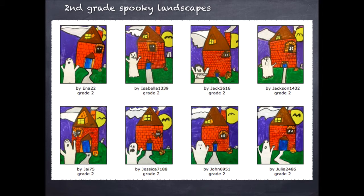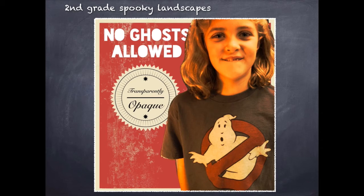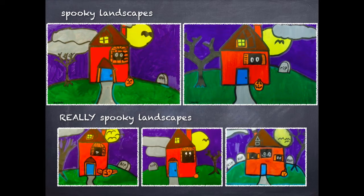I'm going to start by looking at a spooky landscape painting. This project I've done with second grade — the idea is that we tried to show foreground, middle ground, and background. Our ghost was in the foreground with overlapping, our spooky house was in the middle ground, and our sky, moon, bat, and clouds were all part of the background. Students were exploring concepts of landscape. But I thought to make it more spooky, we could get rid of the ghost in the foreground, which let me do two different things digitally.